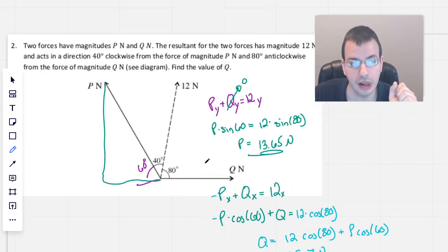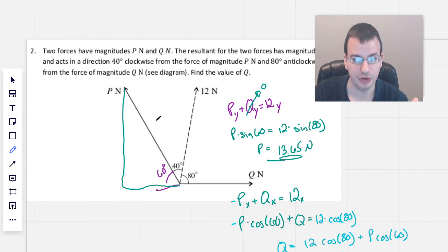So to kind of backtrack what we did, we were told that P and Q, when added together vectorially, will equal 12. Well, when two vectors are added together, you add both the X components and the Y components.